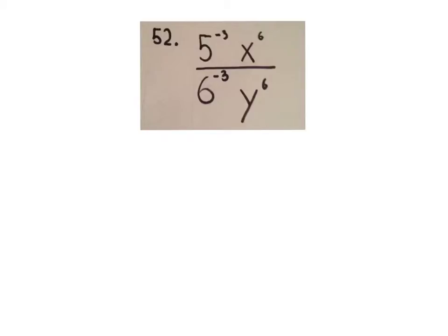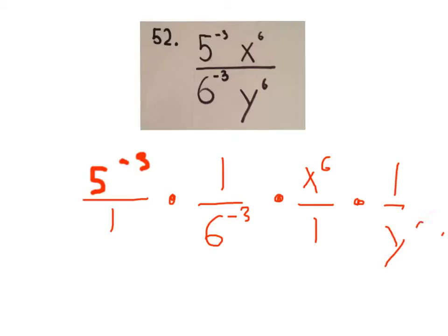Alright, to start we're going to separate all the parts of this equation. So we have 5 to the negative 3rd, and that's on the top so we'll put it over 1, times 1 over 6 to the negative 3 because that's on the bottom, times x to the 6th over 1 times 1 over y to the 6th.